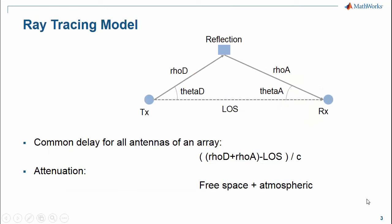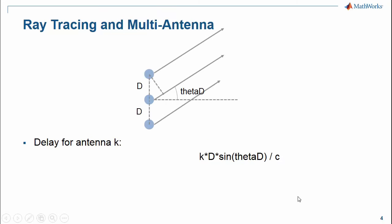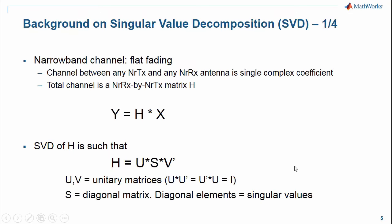Let's have a look at the channel model. We model N scatterers, or reflectors. We associate each path with a delay and attenuation. The delay is normalized by the line-of-sight distance. The attenuation is due to free space propagation, as well as atmospheric absorption. Both the transmitter and the receiver use an antenna array, and we can vary the number of antennas. For the transmit antenna array, a signal leaving at angle theta d incurs a delay from antenna k compared to antenna 0, that is k multiplied by d multiplied by sine theta d divided by the speed of light.